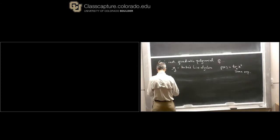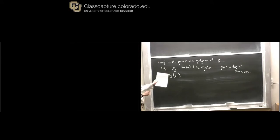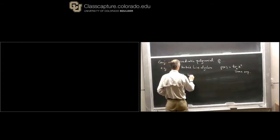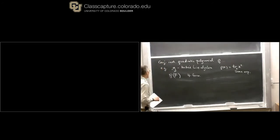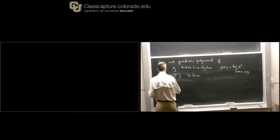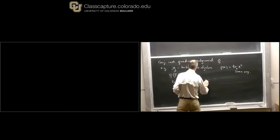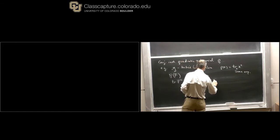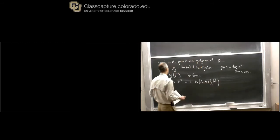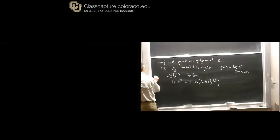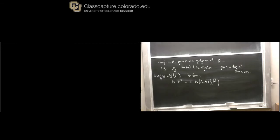You're invited to consider P of F. Since F is valued in the Lie algebra, you can apply P of F. Because this is quadratic, this is some kind of four-form. This is a total derivative, so we can write trace of F squared equals D of trace of A dA plus two-thirds A cubed. In general, P equals D of what I'll call the Chern-Simons form, CS sub P of A.